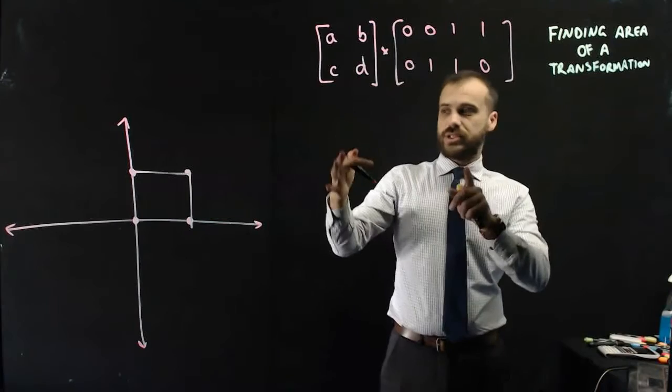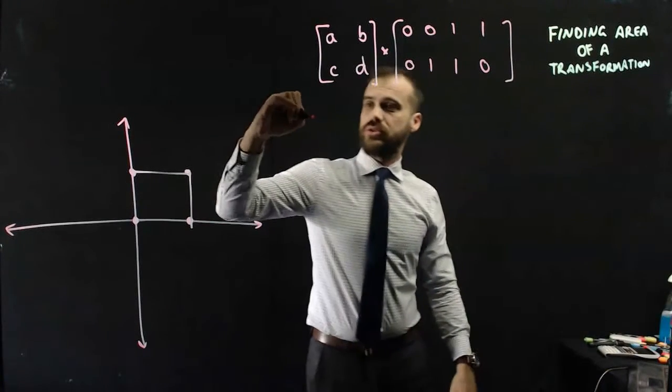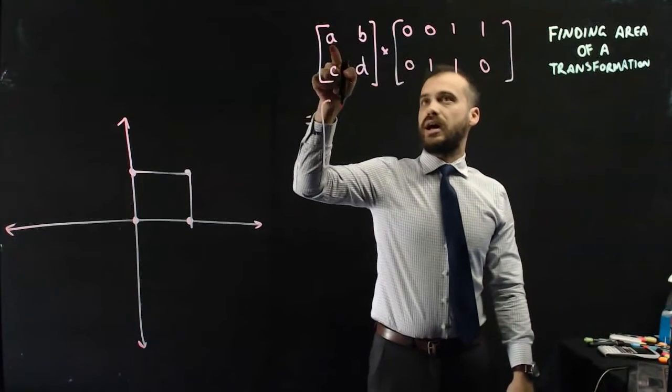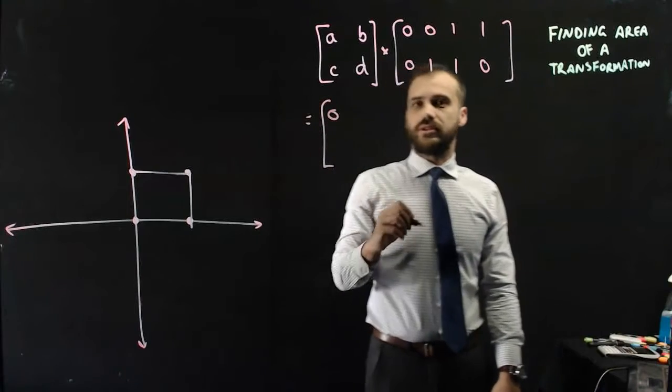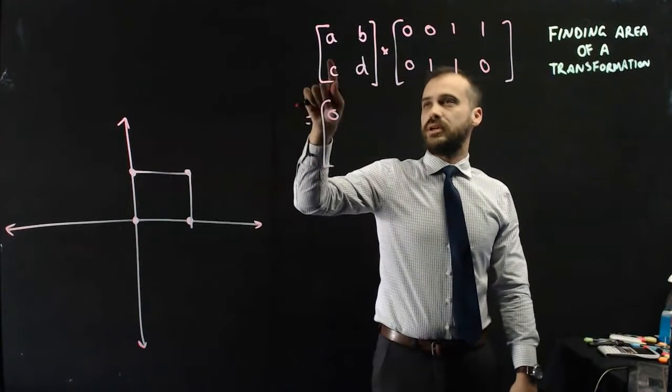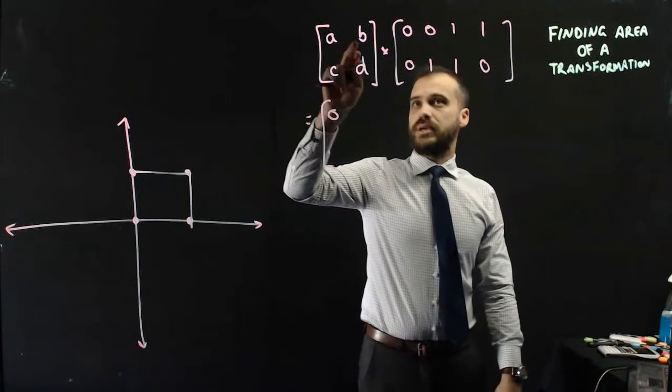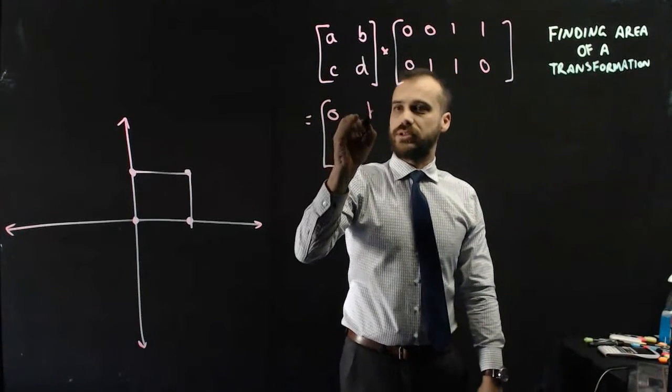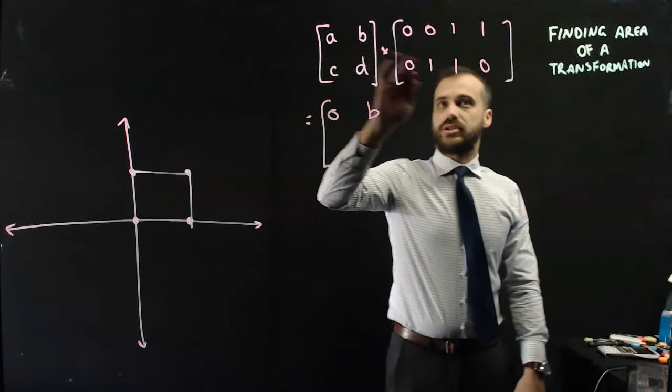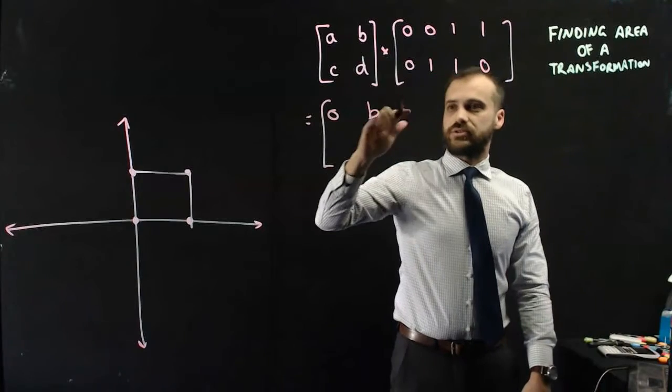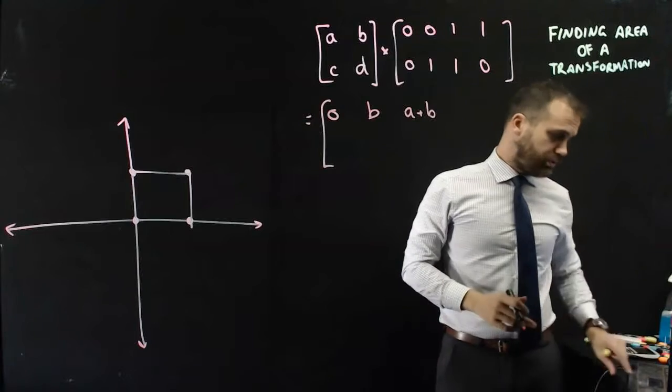And I'm going to multiply those matrices together to get a new result. So let's do part of it. A times 0, B times 0, that first result is going to be 0. A times 0, B times 1, that next result is going to be B. A times 1, B times 1, that next result is going to be A plus B.